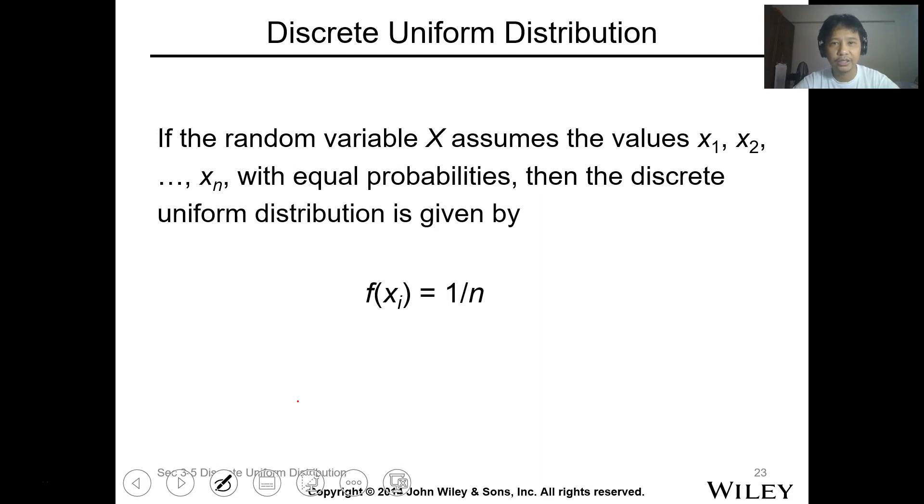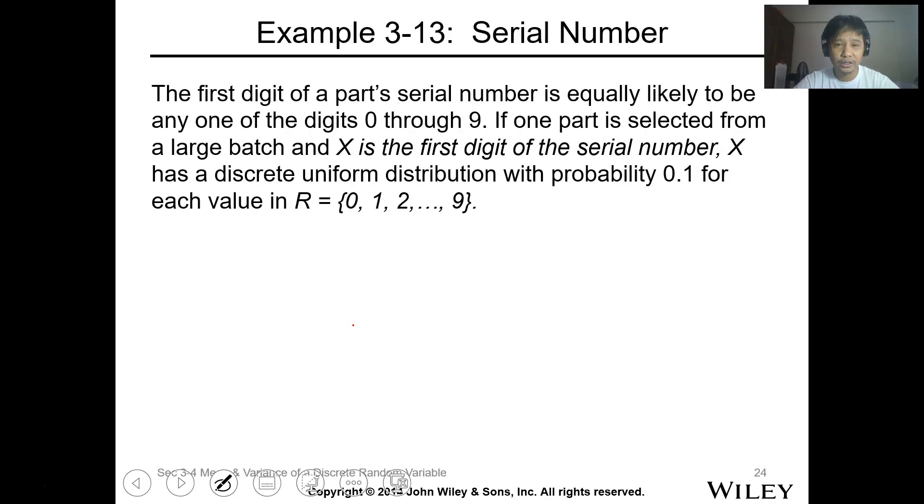Let's have the discrete uniform distribution. This is another distribution function where all the probability of each item are the same, equally likely. If the random variable X assumes the values x1 to xn with equal probability, then the uniform distribution of the discrete random variable is 1 over n. Let's have this example for a serial number. The first digit of a part's serial number is equally likely to be any one of the digits 0 to 9.